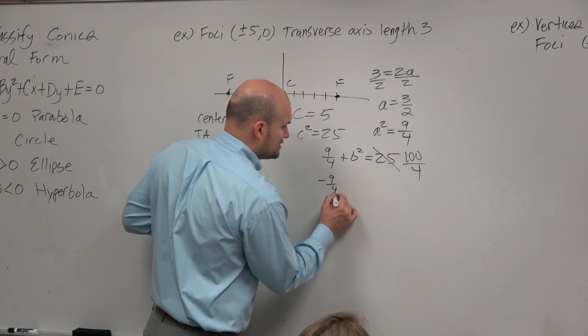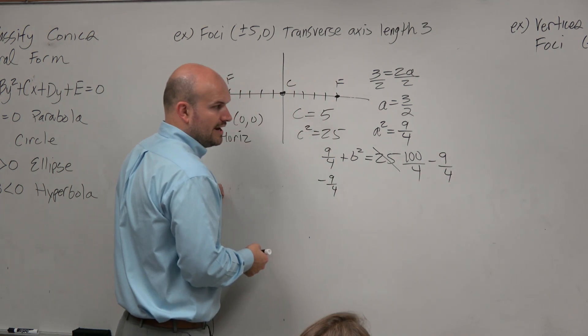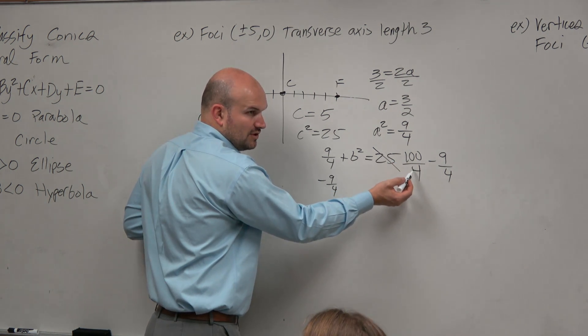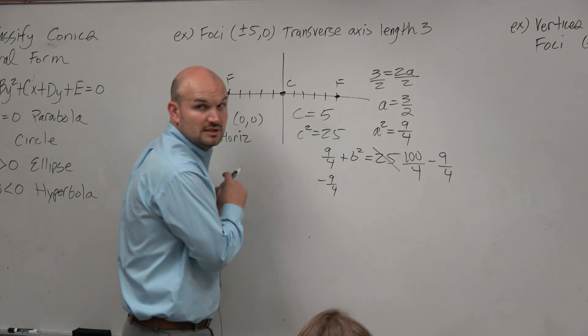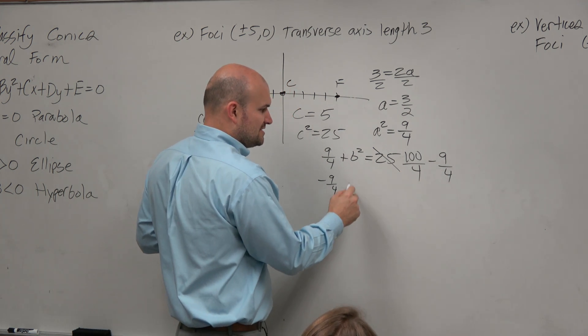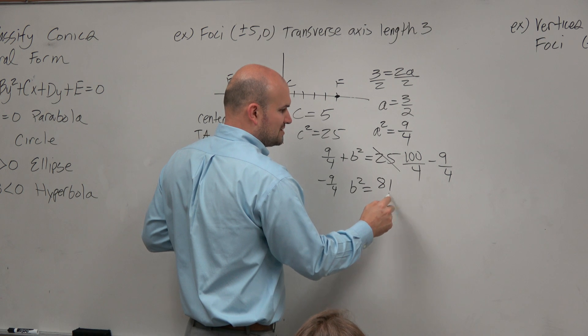So I don't want to do 25 minus 9 fourths. I want to rewrite 25 as 100 fourths. 100 fourths minus 9 fourths is going to be equal to 81 fourths. 91. 91. Sorry. Thank you.